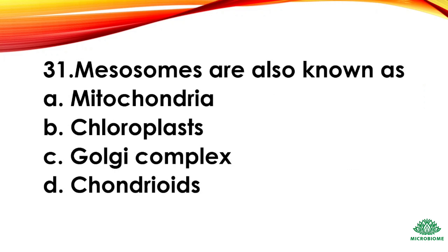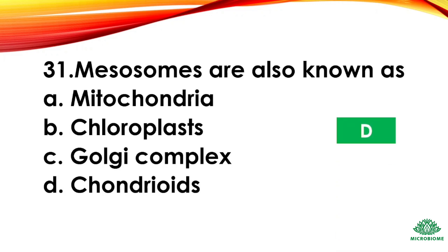Question 31: Mesosomes are also known as — options: mitochondria, chloroplast, Golgi complex, chondroids. The right answer: option D, chondroids.